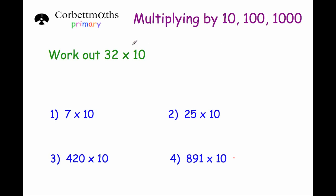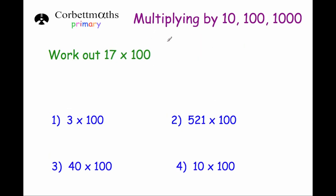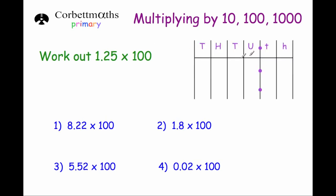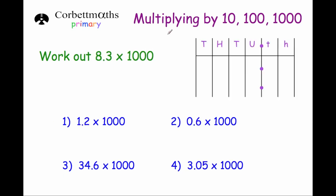First of all, we're going to look at how to multiply whole numbers by 10. Then we're going to look at how to multiply decimal numbers by 10, whole numbers by 100, multiplying decimal numbers by 100, whole numbers by 1000, and then finally decimal numbers by 1000.